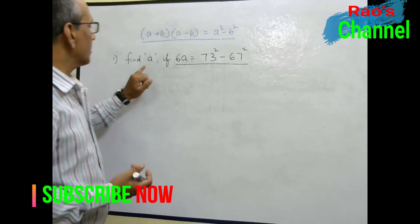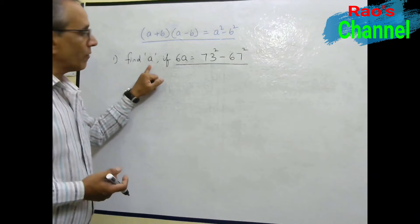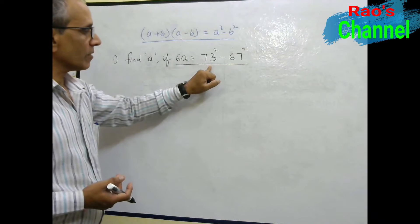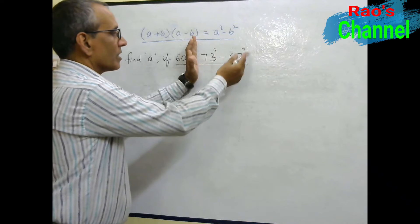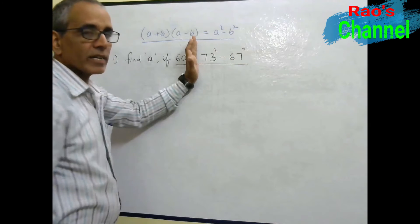In the given question we are asked to find A where 6A is equal to 73 square minus 67 square. When I see the RHS part, this is in the form of A square minus B square which is the right side of the identity.